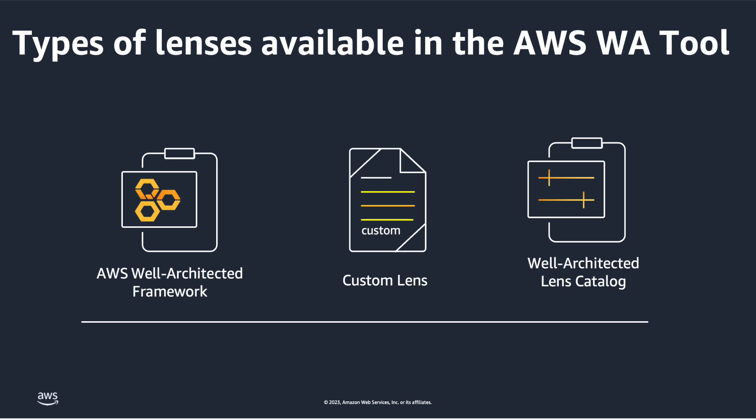Third, building off of the success of the Well-Architected framework and the custom lenses feature, the Lens Catalog is a new lens repository in the AWS Well-Architected tool where customers can explore and implement the latest best practices available from AWS. The Lens Catalog provides customers with access to broader industry and technology AWS author lenses, so they can easily customize their reviews based on the topics most important to their business.